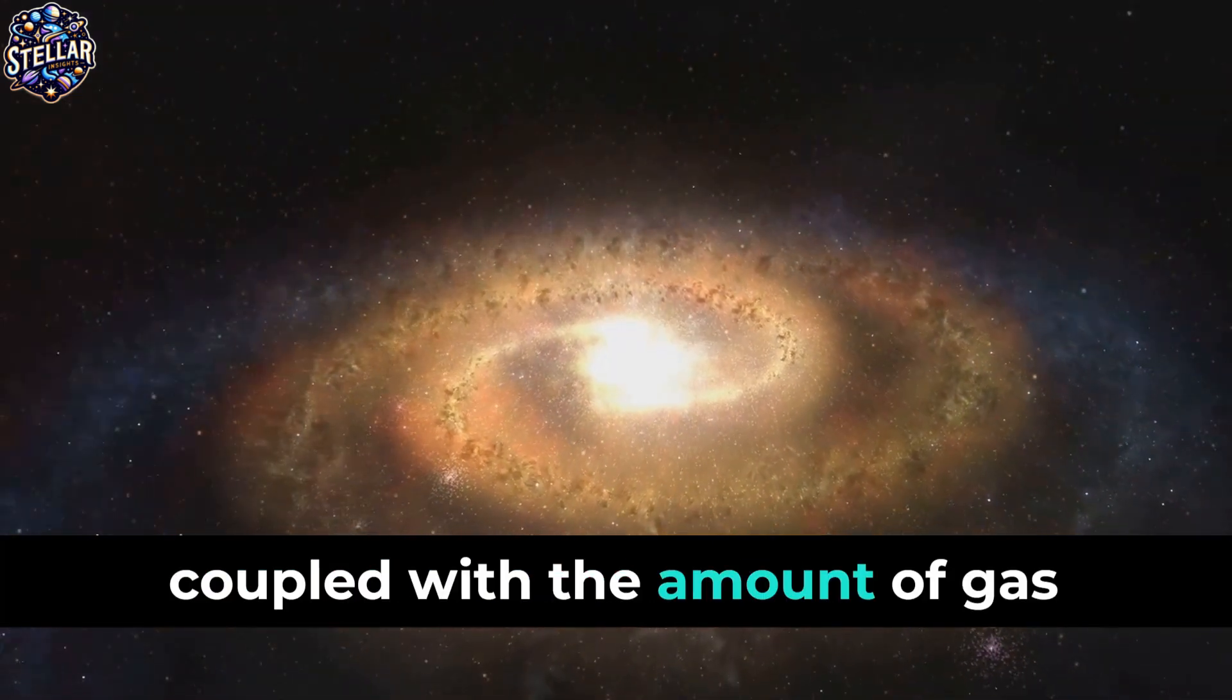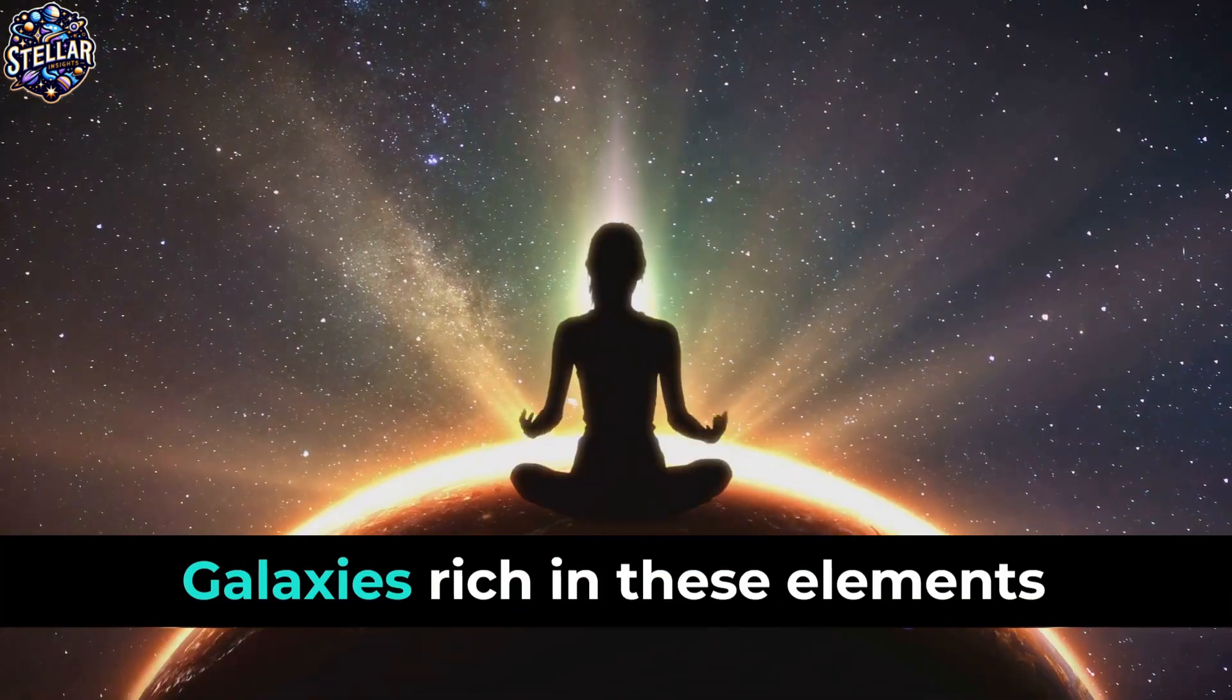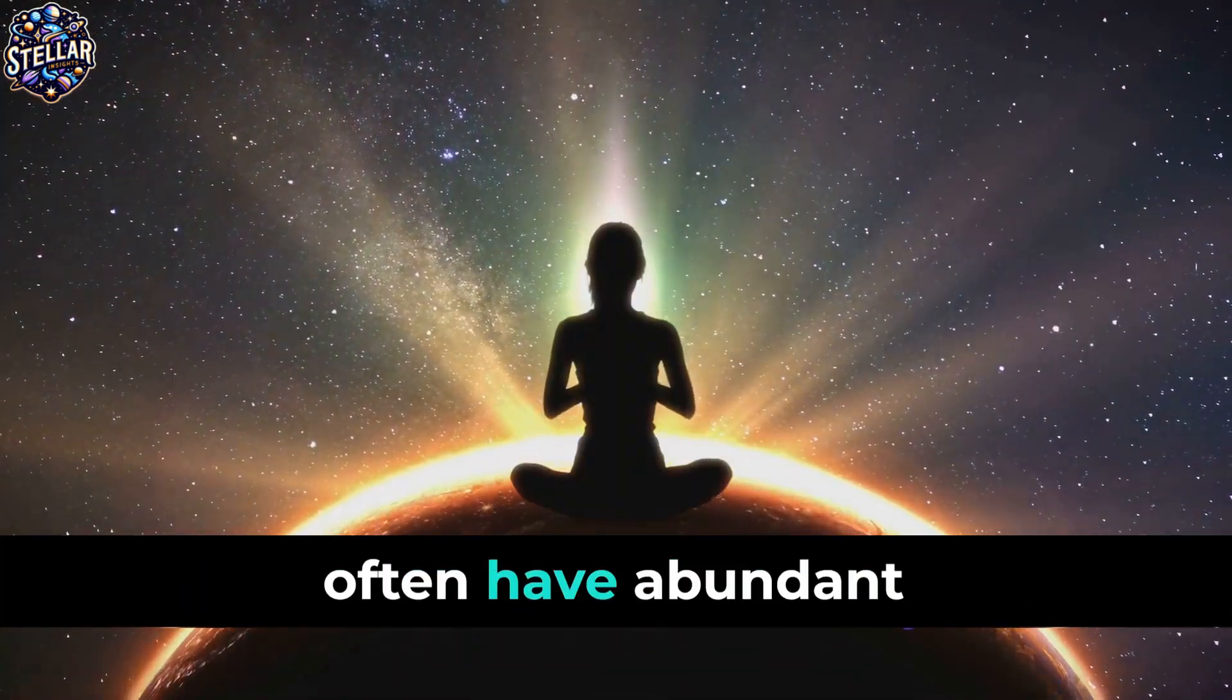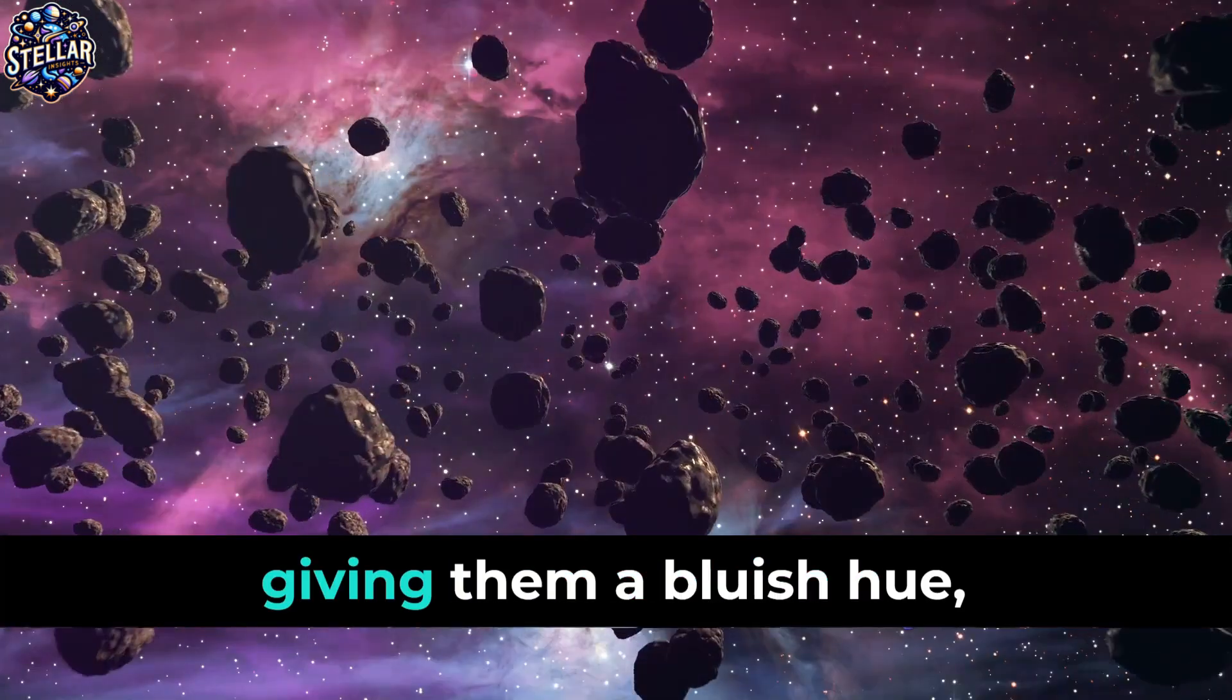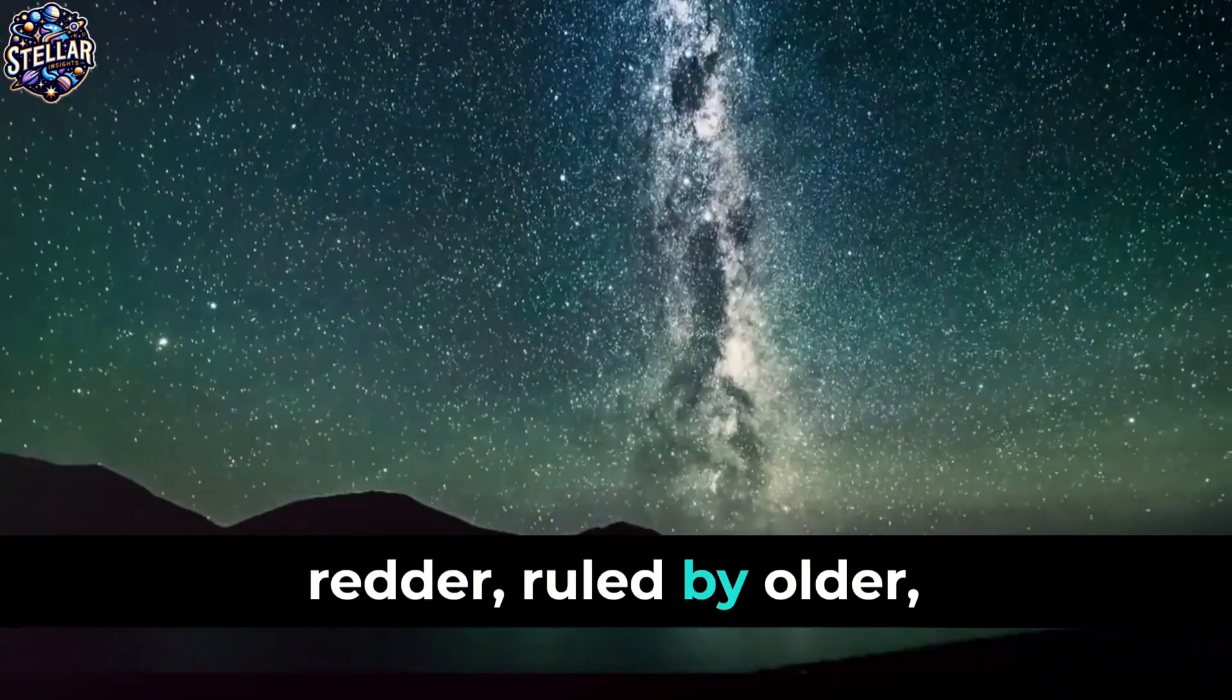This, coupled with the amount of gas and dust a galaxy possesses, greatly determines its appearance. Galaxies rich in these elements often have abundant star formation, giving them a bluish hue, while those lacking appear redder, ruled by older, cooler stars.